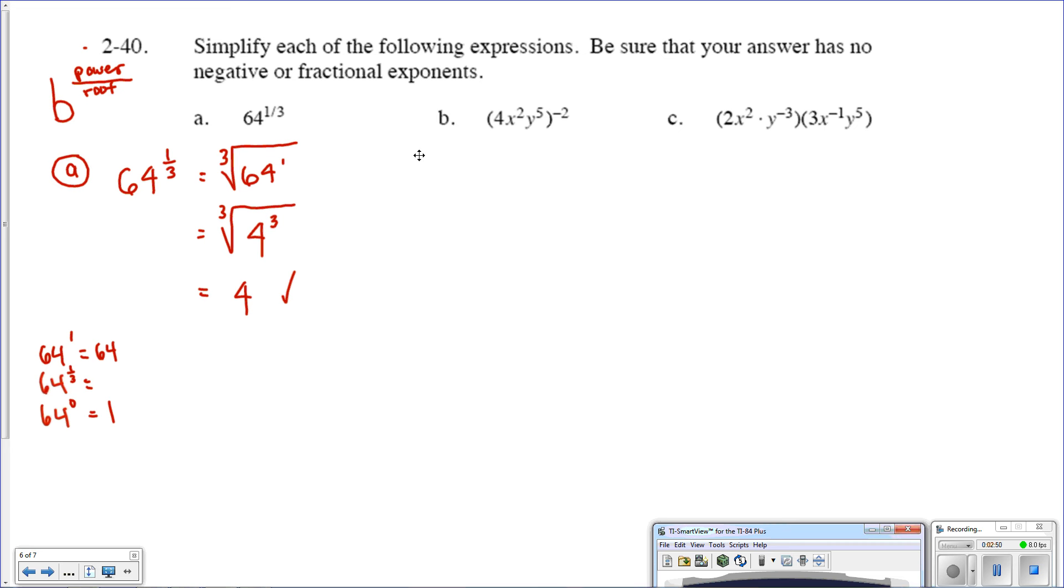Letter B. We have 4x squared, y to the fifth, raised to the negative second power. Right now, we have a monomial raised to the negative second power. This is not a binomial, so don't think about addition and subtraction, because there isn't any. We could take each power in here and raise it to the negative second power.